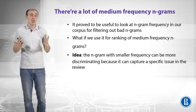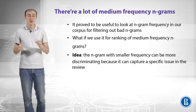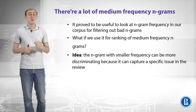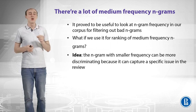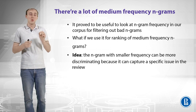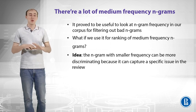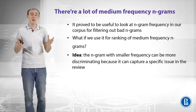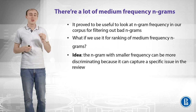The problem is there are a lot of medium-frequency n-grams. It proved to be useful to look at n-gram frequency in our corpus for filtering out bad n-grams. What if we can use the same frequency for ranking medium-frequency n-grams? The idea is that an n-gram with smaller frequency can be more discriminating because it captures a specific issue in the review. For example, 'Wi-Fi breaks' cannot be very frequent in our corpus, but it can highlight a specific issue that we need to look at more closely.